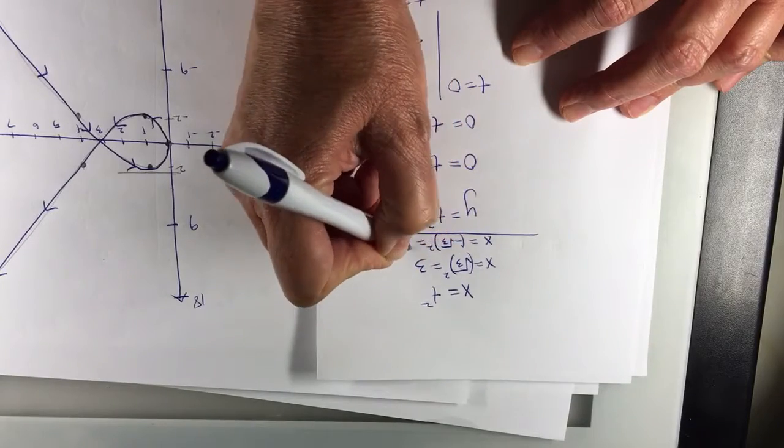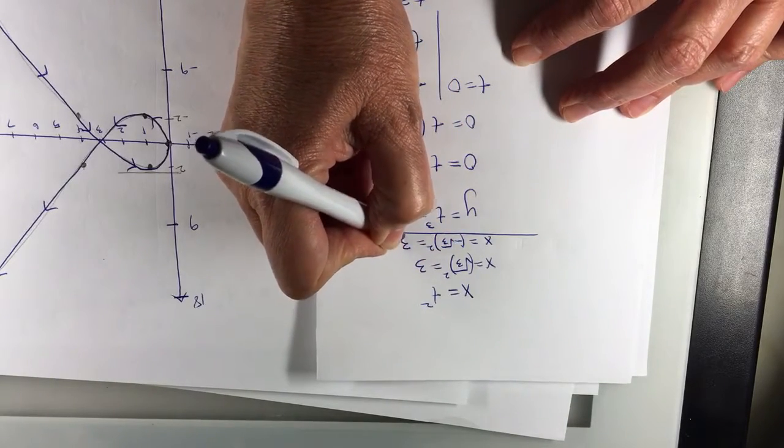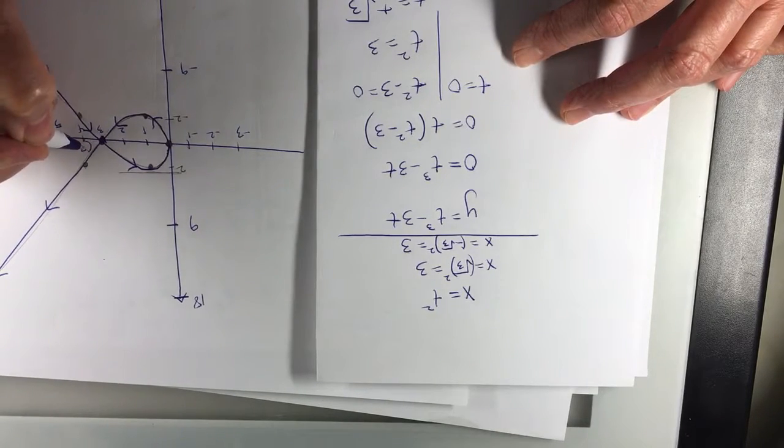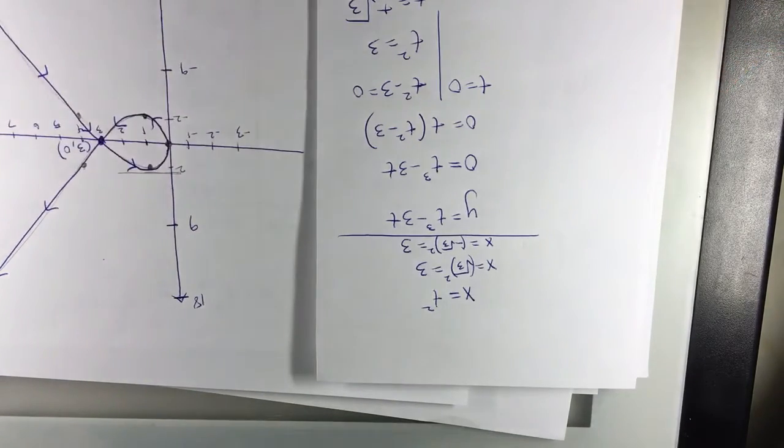And when t equals negative square root of 3, you get 3. So right here, this point is at 3, 0, where it is crossing the x-axis. So I found that.